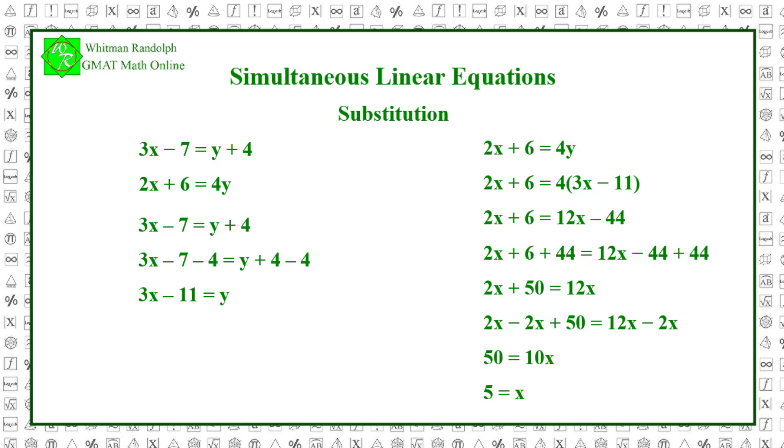To obtain the value for y, we simply substitute 5 for x in the other equation. 3x minus 11 equals y. So 3 times 5 minus 11 equals y and 4 equals y. This solution is easily validated by plugging 5 in for x and 4 in for y in the original equations.